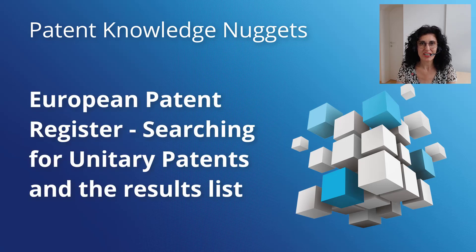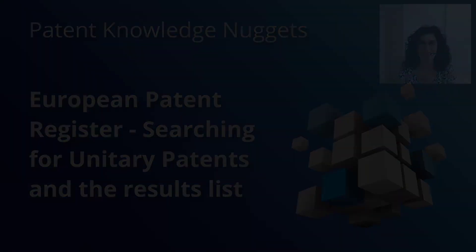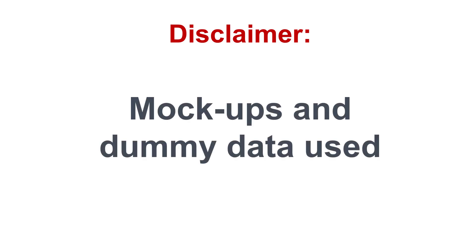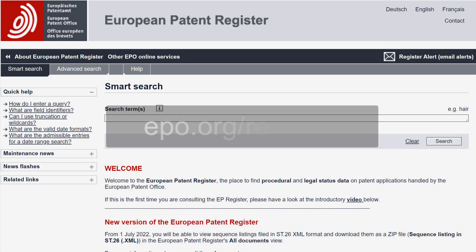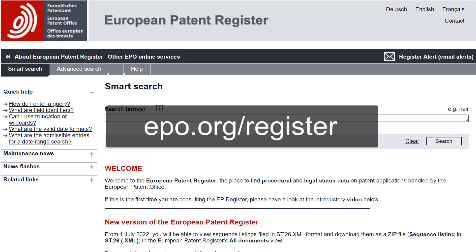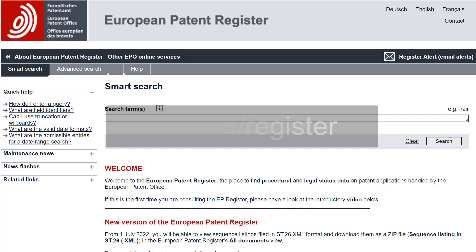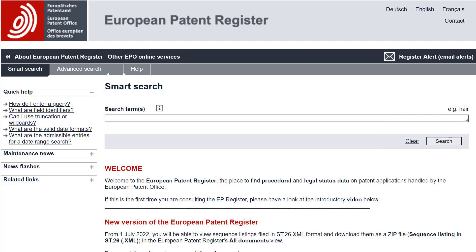Hello, everyone. My name is Yolanda Sánchez-Garcia. In this video, I'm going to show you how to search for unitary patents in the European Patent Register and look at the search results list. Be aware that as the unitary patent has not yet been launched, I'm using some mockups and dummy data here. With the European Patent Register, you can easily search for patents for which unitary effect has been requested or registered. But you are probably wondering how. Let's have a look.